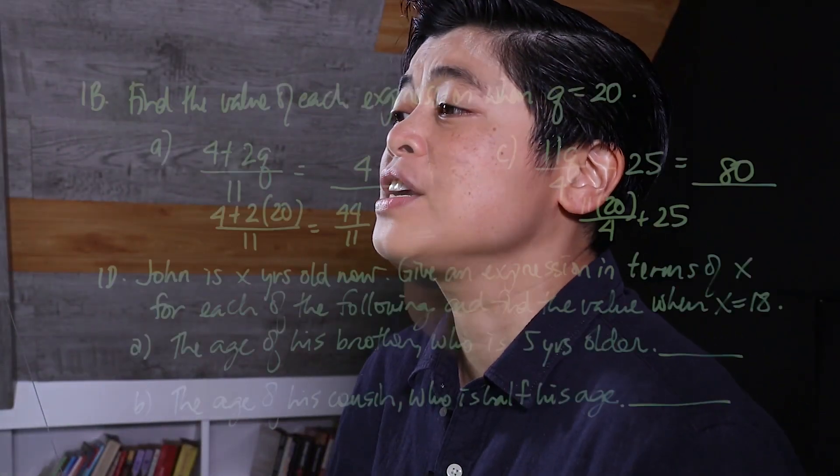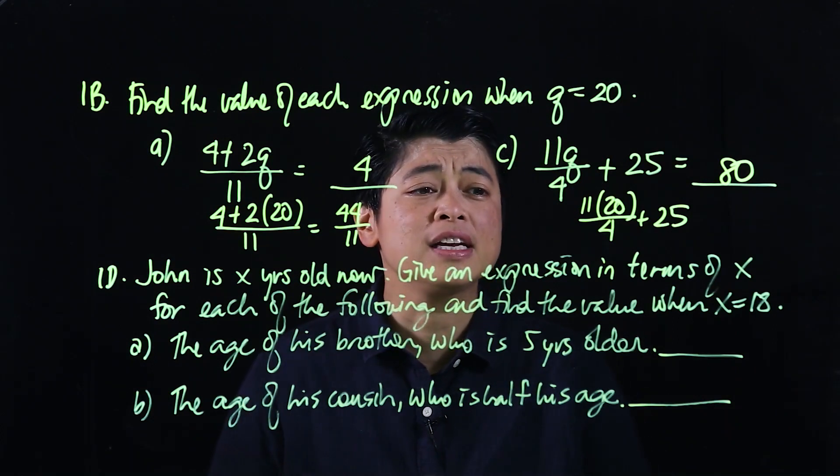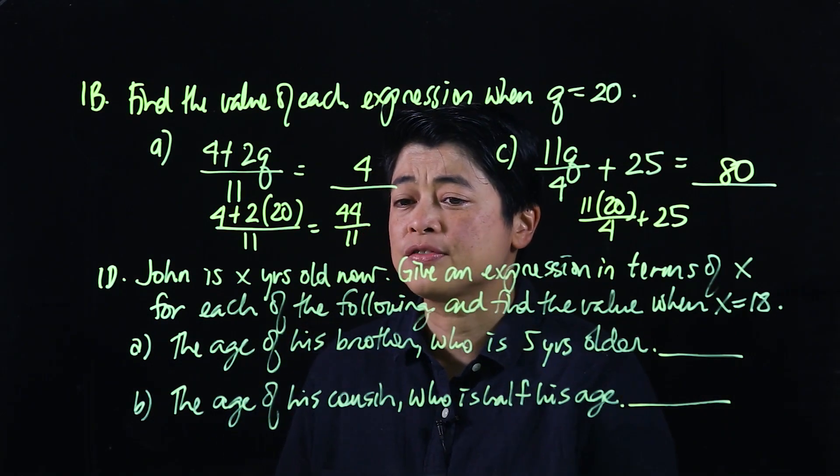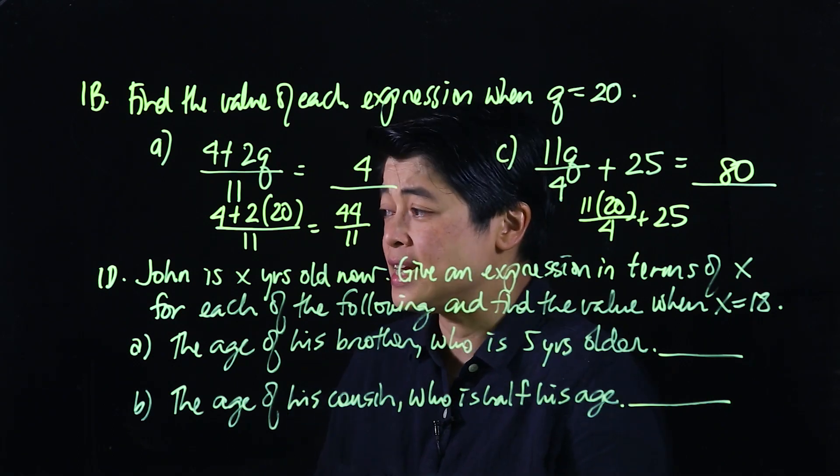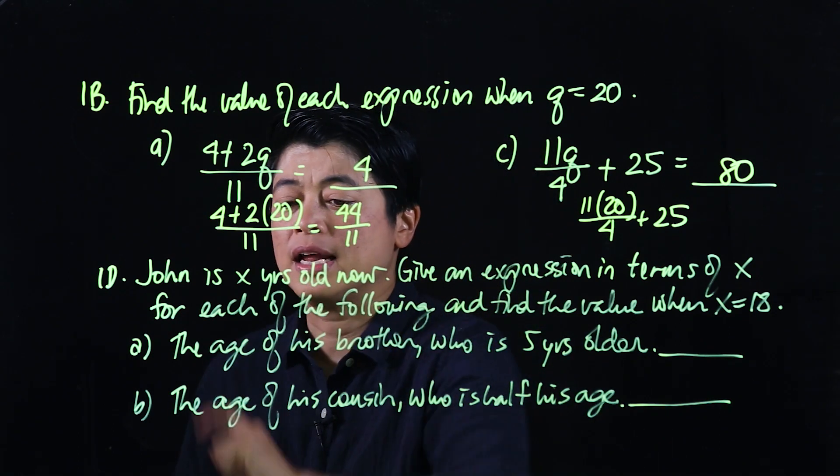So which means in 1D, it says John is x years old now. Give an expression in terms of x for each of the following and find the value when x is 18.